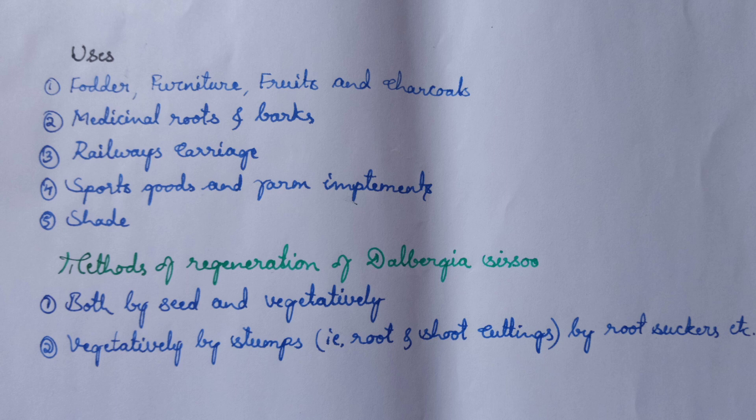Methods of regeneration for Dalbergia sissoo: there are two types of reproduction — one is by seed, and the other is by vegetative propagation. Vegetative propagation happens by stumps, that is root and shoot cuttings, and by root suckers.